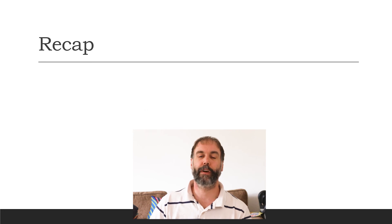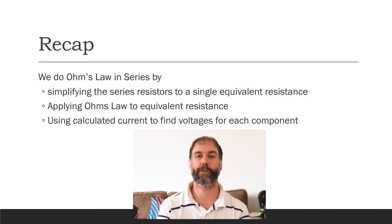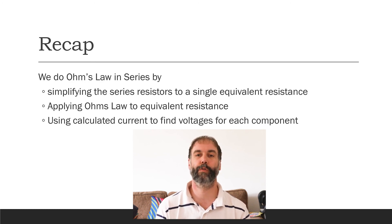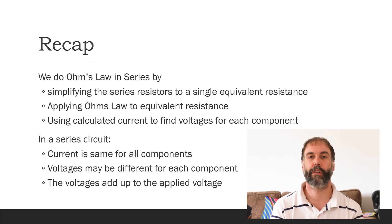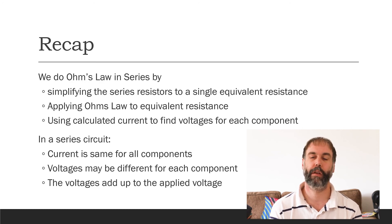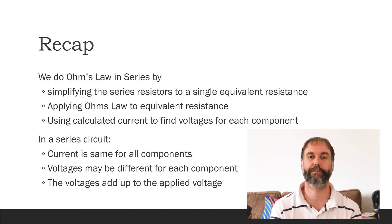To recap: to use Ohm's Law in a series circuit, simplify the circuit to one equivalent resistance, use Ohm's Law to find the current, then use that current in the original circuit to find the voltages across each resistor. In a series circuit the current must be the same through all components since there's only one path, but voltages can differ, and the sum of voltages equals the original applied voltage.